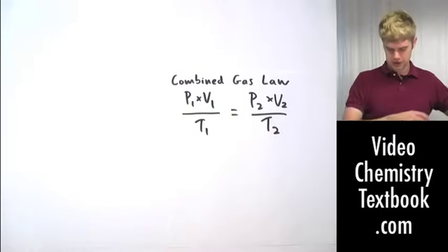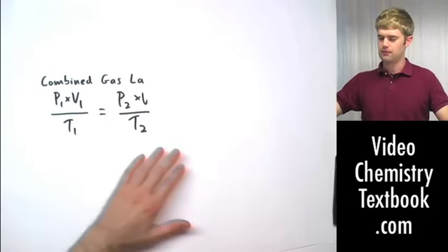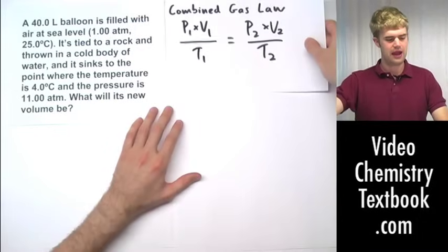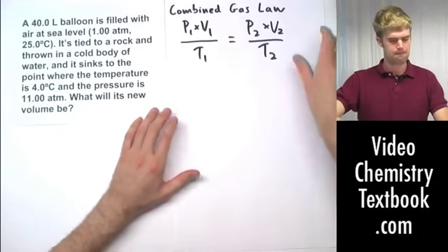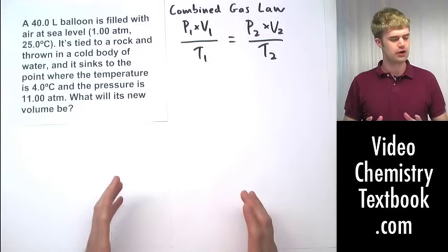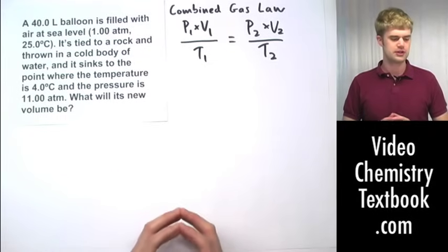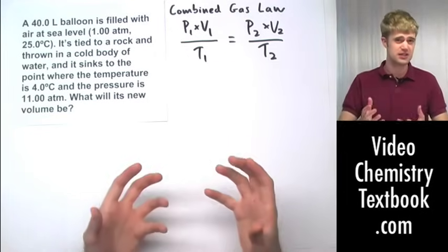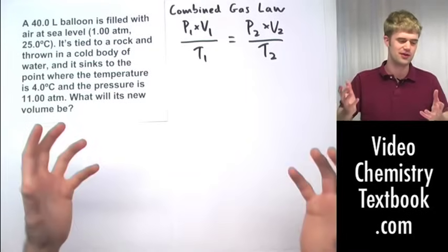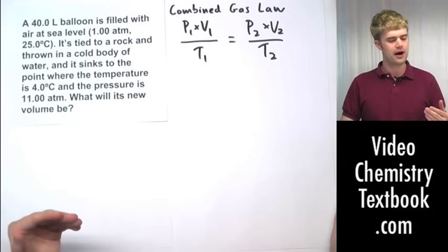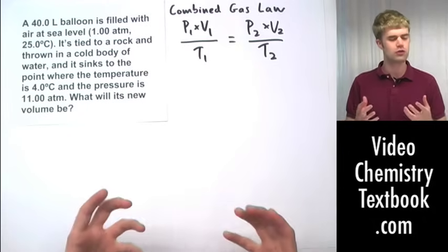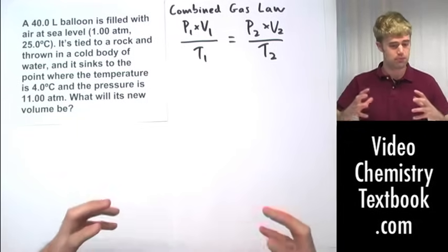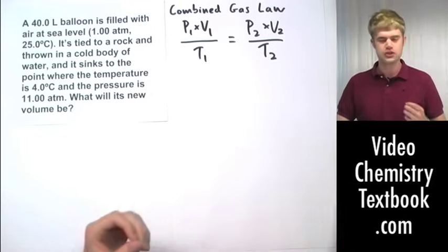I could use this combined gas law to solve a problem like this. A 40.0 L balloon is filled with air at sea level, which is 1.00 ATM of pressure, 25.0 degrees Celsius. It's tied to a rock and thrown in a cold body of water. I tied it to the rock so that it sinks down in the water, because if I didn't, it would just float on the surface. It sinks to the point where the temperature is 4 degrees Celsius, gets colder, and the pressure is 11 ATM, so there's much more pressure pushing on this balloon. What will its new volume be?